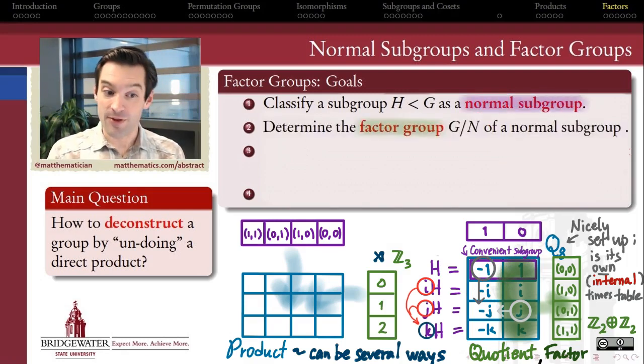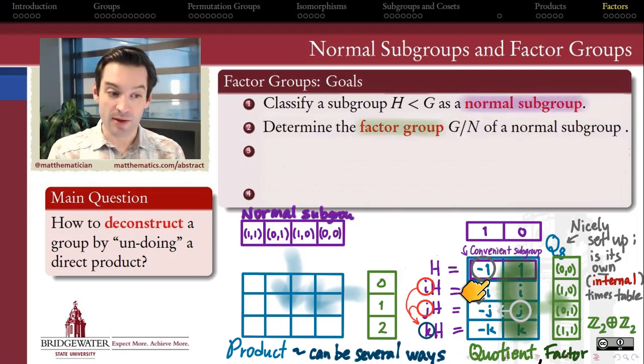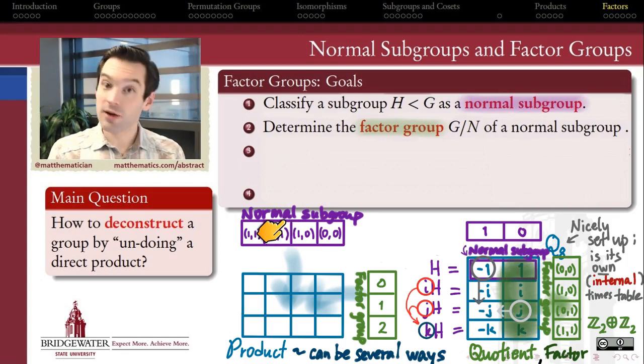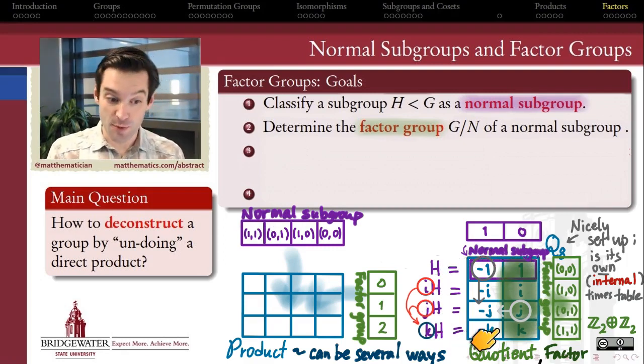And then secondly, for those that do, how do we determine the structure of this group of cosets that we call the factor group? In this example, it's this group over here on the side, the factor group. And so we're setting up this relationship between two smaller constituent groups. The normal subgroup on the one hand, the factor group of its cosets on the other hand, and then the large group that has all of our structure in the middle as the product.